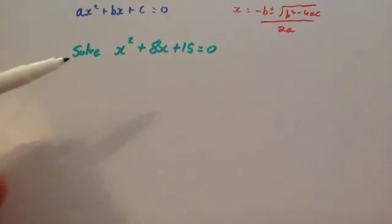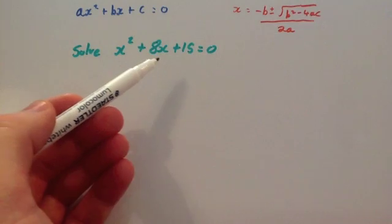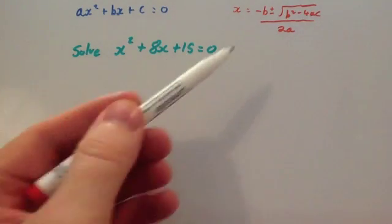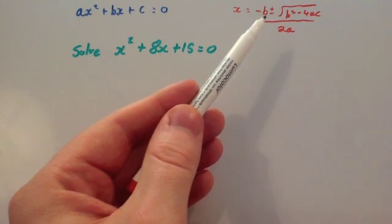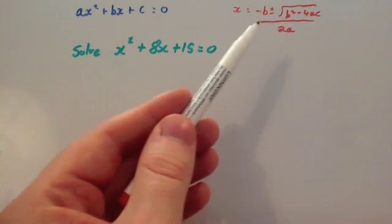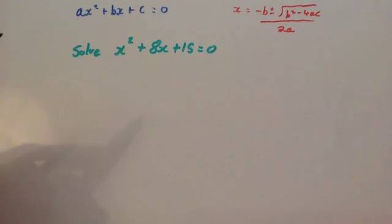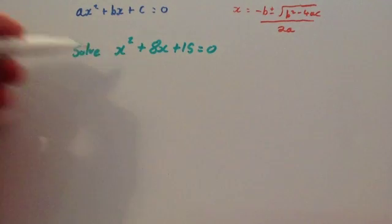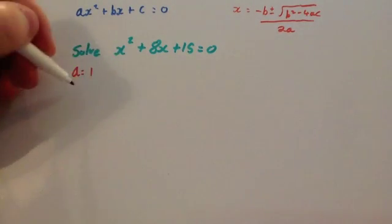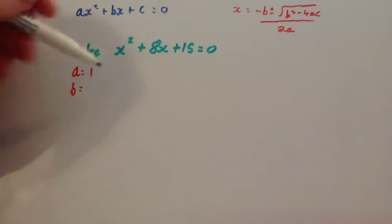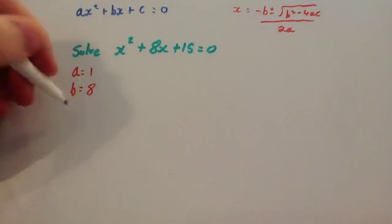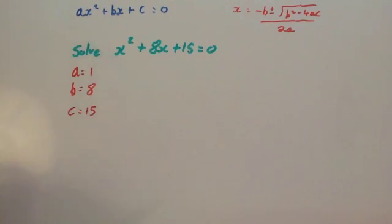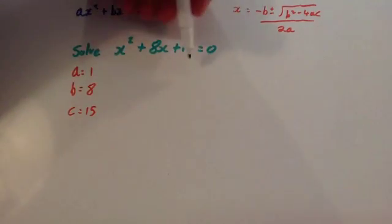Let's do a question using the quadratic formula. We're going to solve x squared plus 8x plus 15 equals 0. Here's the quadratic formula: x equals negative b plus or minus the square root of b squared minus 4ac, all divided by 2a. First, let's label our a, b, and c. Here a is the coefficient of x squared, so it's 1 — remember there's really a 1 in front of the x squared. So a equals 1, and b is the coefficient of x, which is 8.